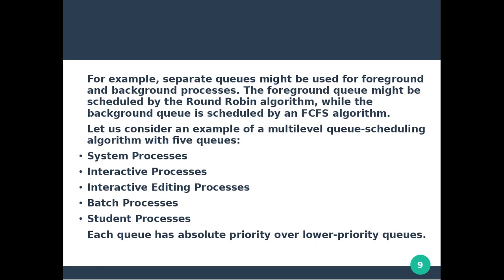Let us consider an example of a multi-level queue scheduling algorithm with 5 queues. There are 5 types of processes here: system processes, interactive processes, interactive editing processes, batch processes, and student processes.